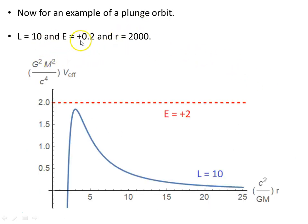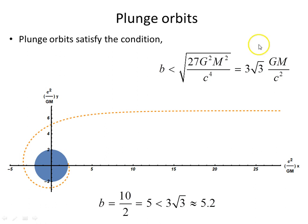Now for an example of a plunge orbit. L is 10, and E is plus 0.2, notice the energy here, it's greater than the maximum of the angular momentum here. Set for L equals 10 for the potential, again set R is 2,000, let's see what we get. Plunge orbits satisfy this condition, less than this object here. When we do that, L is 10, E is 2, b is 5, it's just under this, because 3√3 is approximately 5.2. So that satisfies the condition, and here it is, coming in from a long way out, R equals 2,000 units, all of GM over c², in it comes and plunges, spirals in, to the Schwarzschild mass, and into the origin.